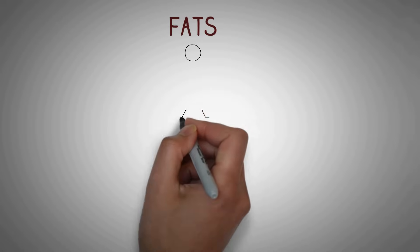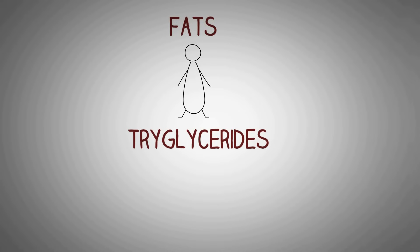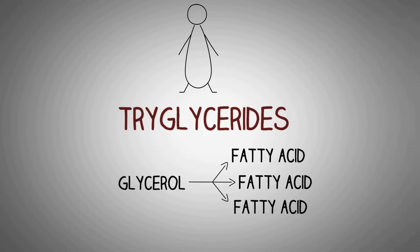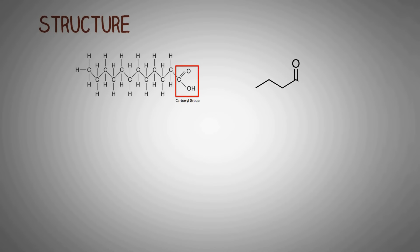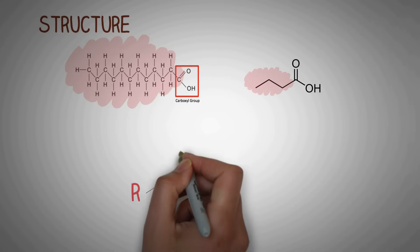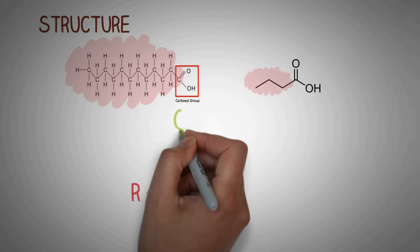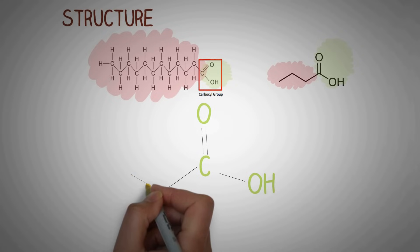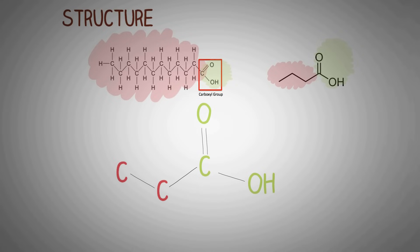Fats are stored in the human body in various forms, and one of the major storage forms are the triglycerides. Triglycerides are composed of a single molecule of glycerol attached to three molecules of fatty acid. It is important to understand the structure of a fatty acid. Here are two images that depict the chemical structure of a fatty acid. It consists of a long chain of carbon and hydrogen atoms, denoted as R, which is attached to the functional group — the carboxyl group, C=O-OH.